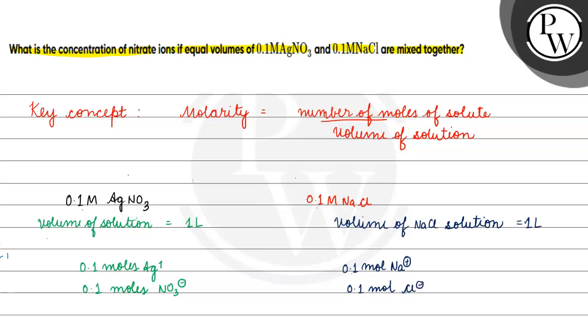Now if we mixed these two solutions, volume of solution after mixing them will be 2 liters. 1 liter plus 1 liter is 2 liters.